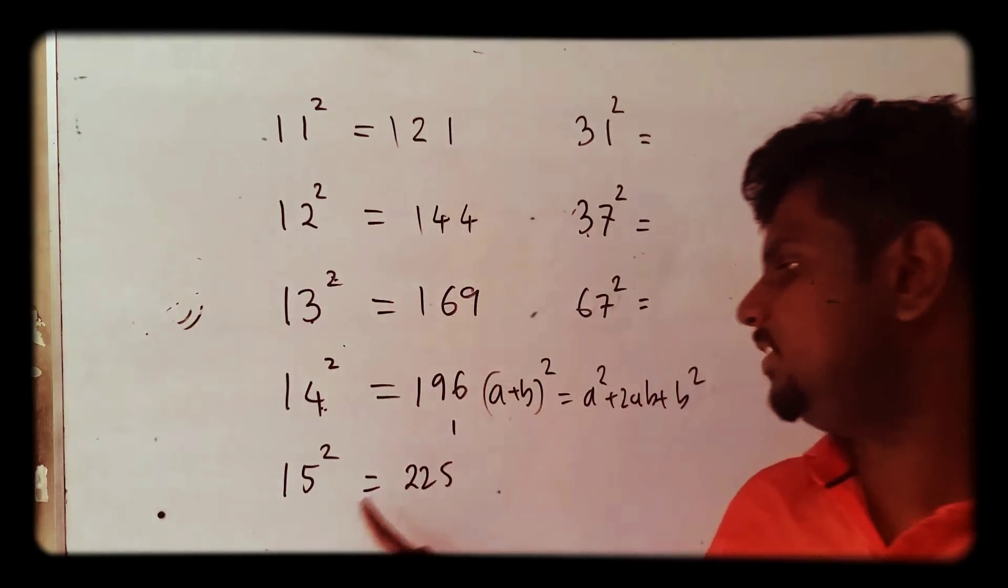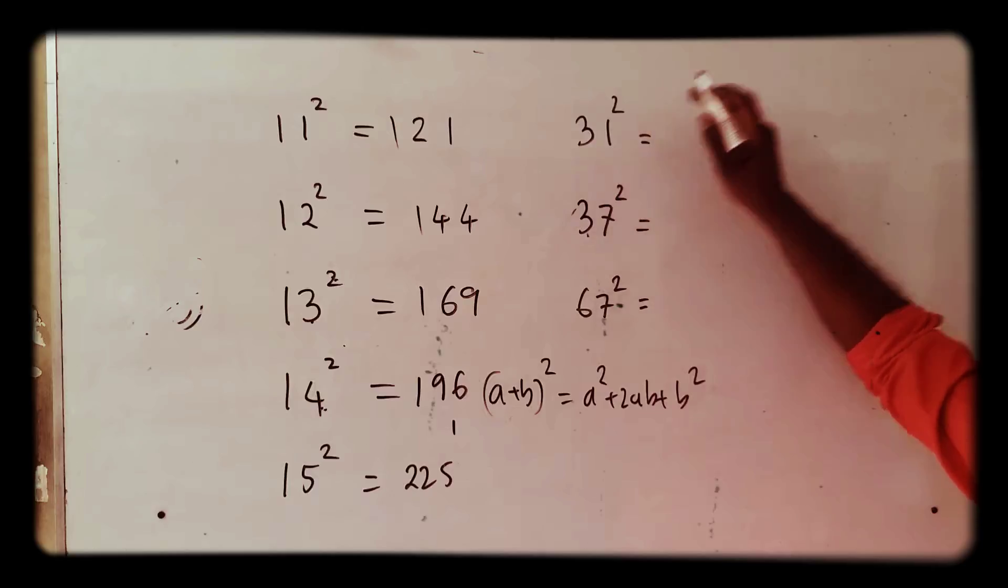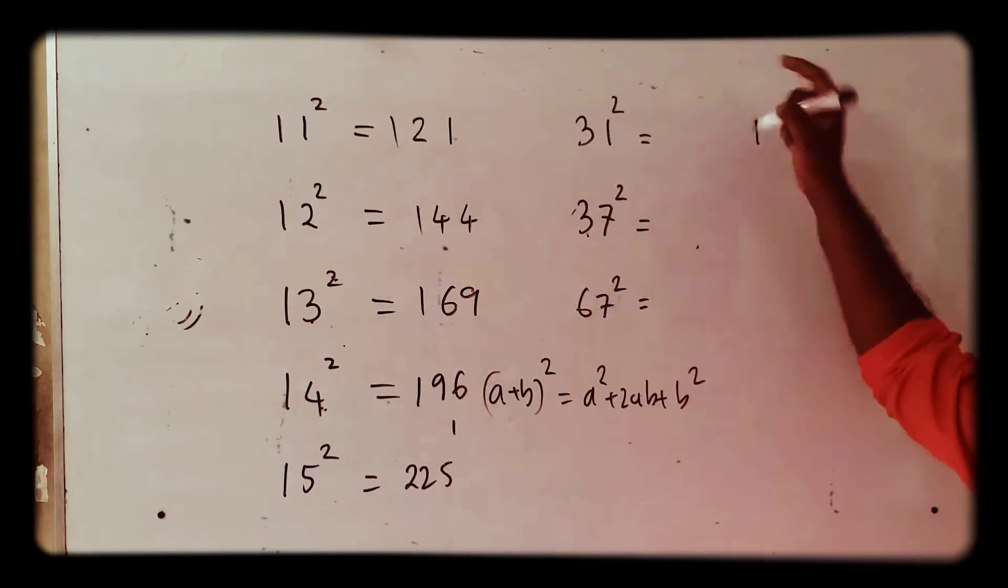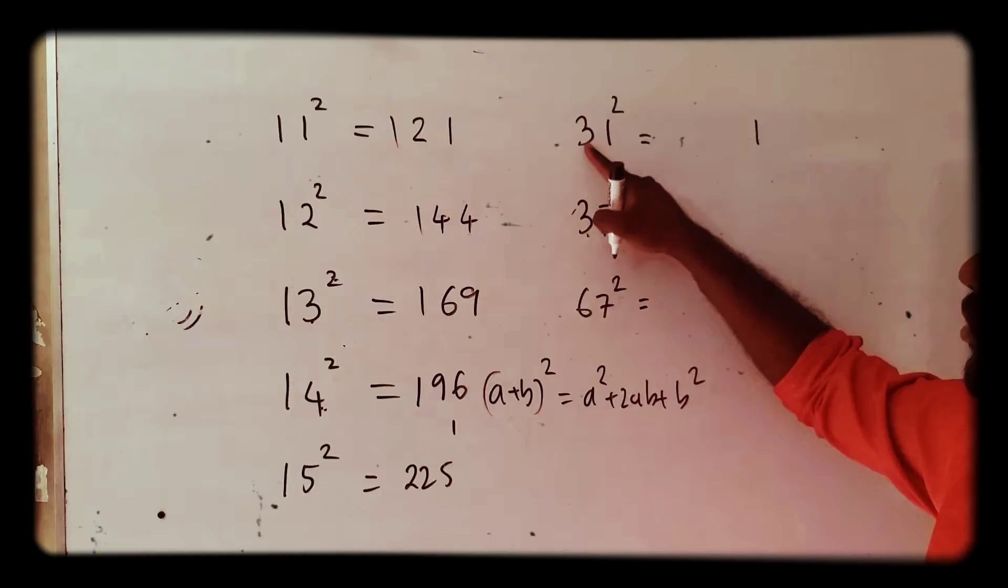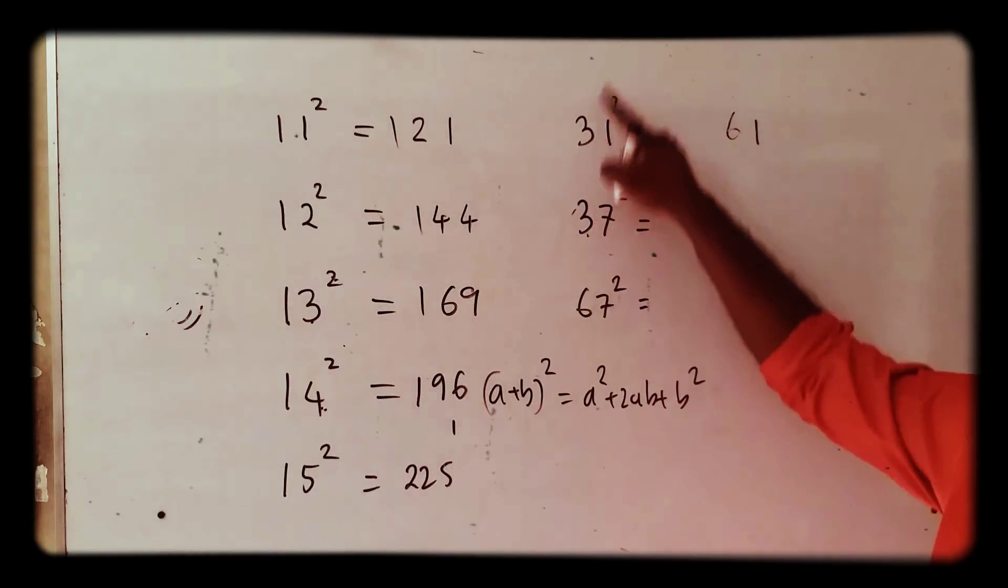31² - 1² = 1, 2 × 3 × 1 = 6, 3² = 9. That's all - 961.